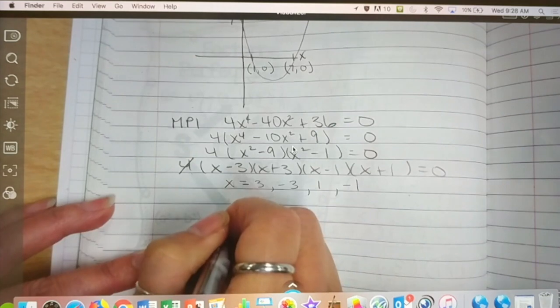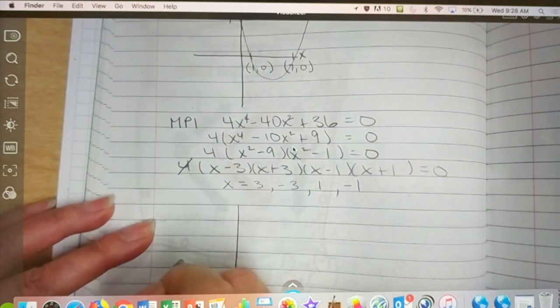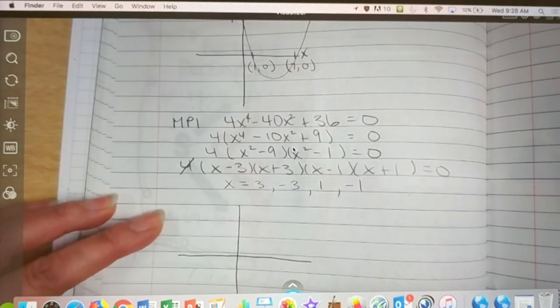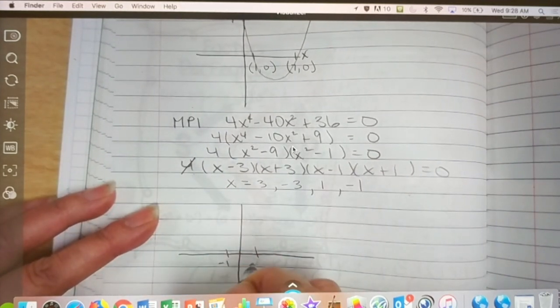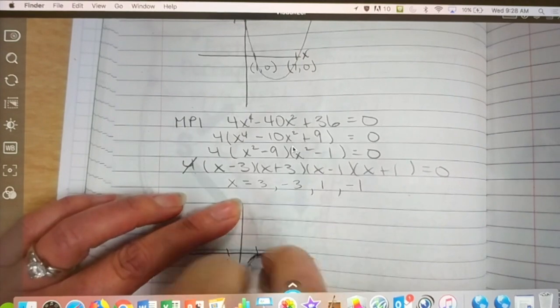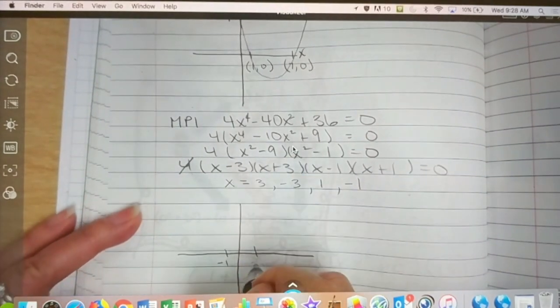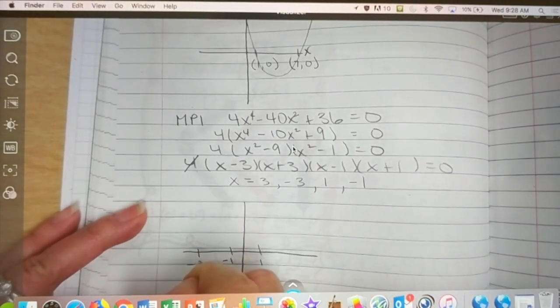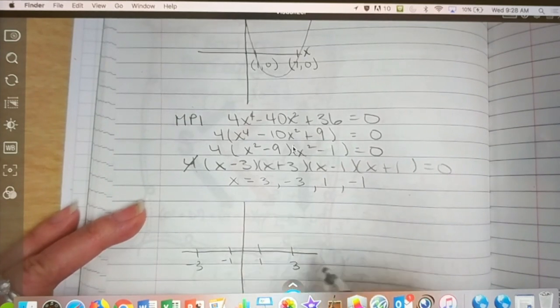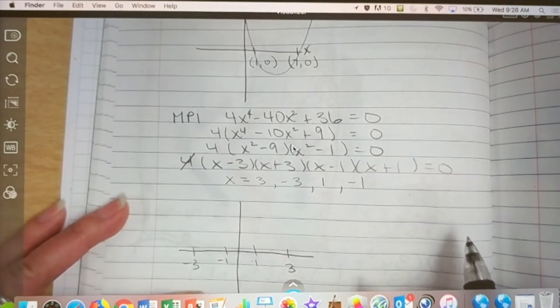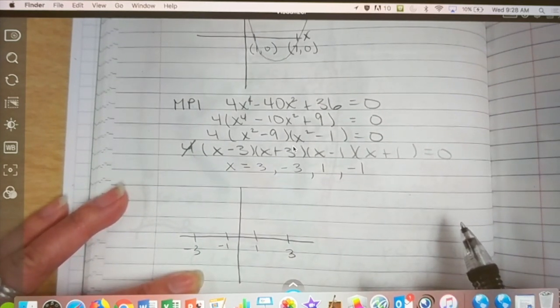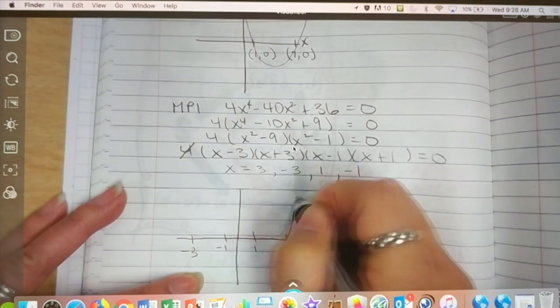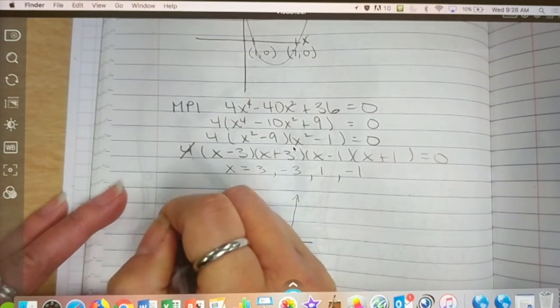If I were to sketch this, which we're all going to sketch it, it crosses at one, negative one, negative one and one. It crosses at negative three and three. And what does the end behavior look like? Same direction. Very good. Because it's even. And which direction? Up or down? Up. So, you know from here to here, it goes here.